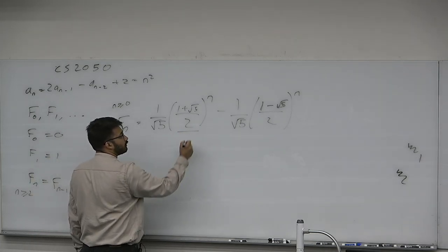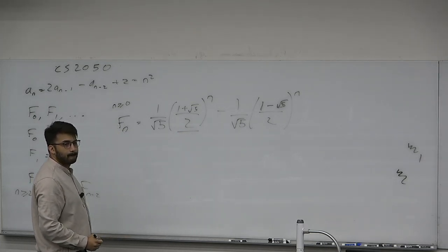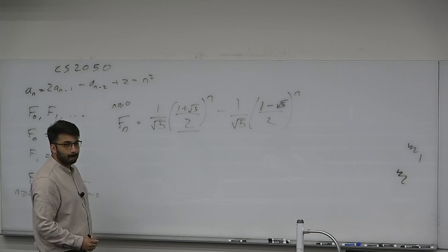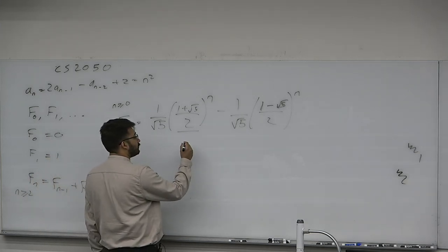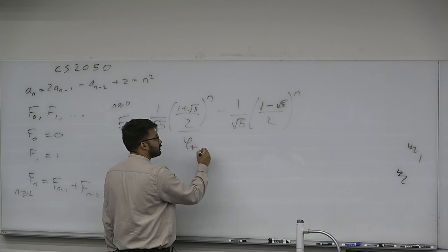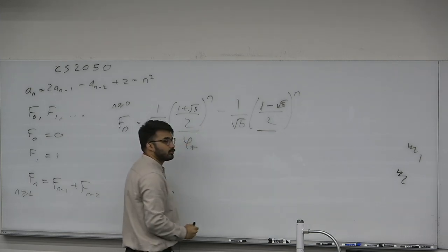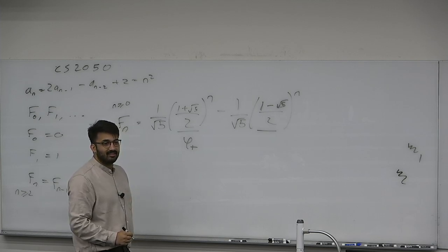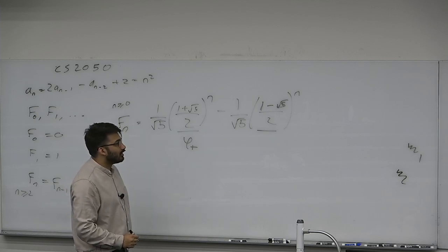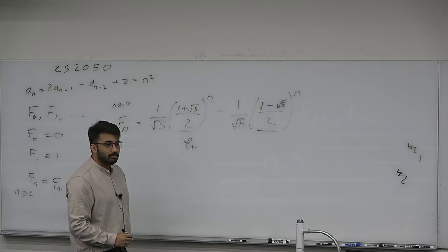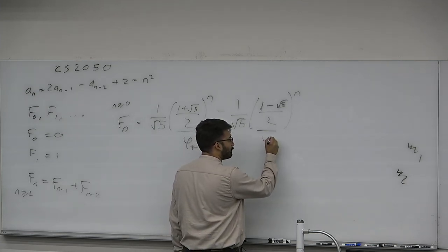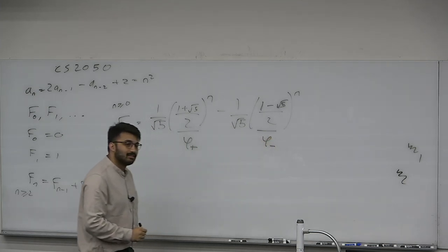What is this number called — (1 + √5)/2? This is the golden ratio. I'm going to denote it as φ+. Does anyone know the name of (1 − √5)/2? I don't actually know what it's called. Someone suggested 'pyrite ratio.' I'm going to use φ− for this.